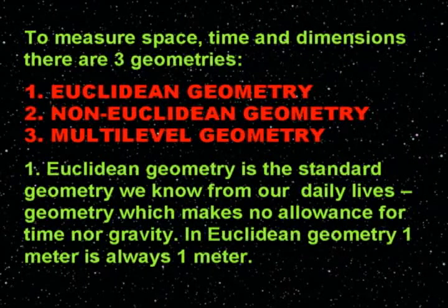To measure space, time, and dimensions, there are three geometries. Number one: Euclidean Geometry. Number two: Non-Euclidean Geometry. Number three: Multi-Level Geometry.